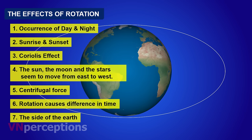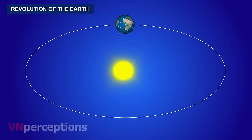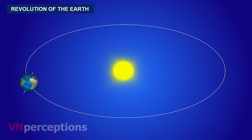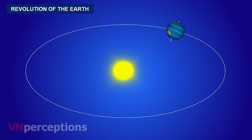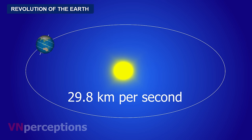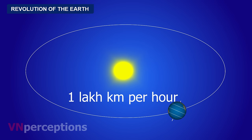Now, the earth is spinning around its own axis and this axis is tilted. With this tilted axis, when the earth revolves around the sun in an elliptical orbit — an orbit that appears like an elongated circle — we call it revolution of the earth, and this leads to various phenomena. The earth moves at an average speed of 29.8 kilometers per second, or approximately 1 lakh kilometers per hour, while spinning on its axis at 1670 kilometers per hour.